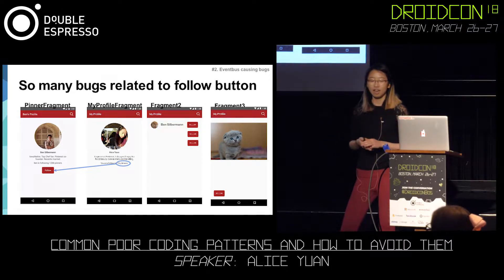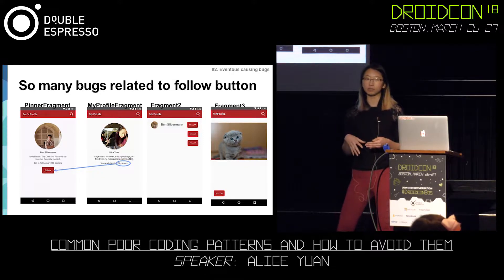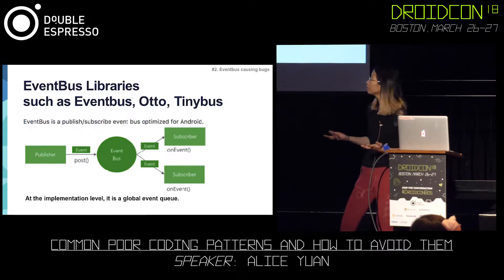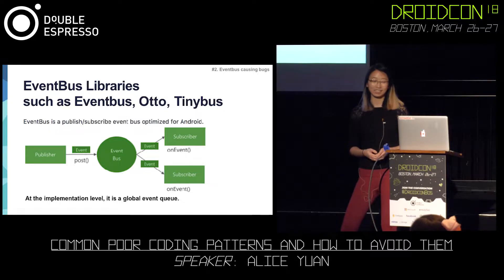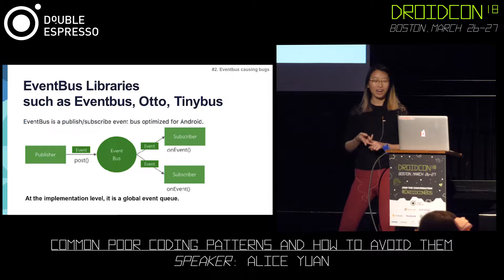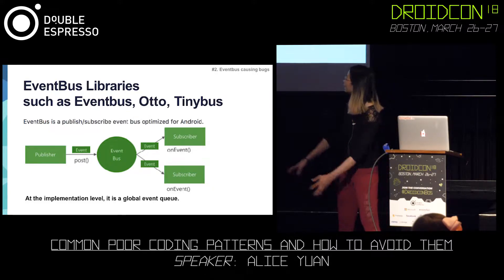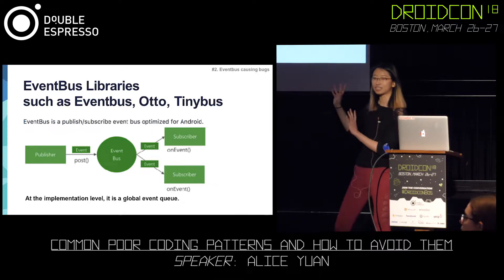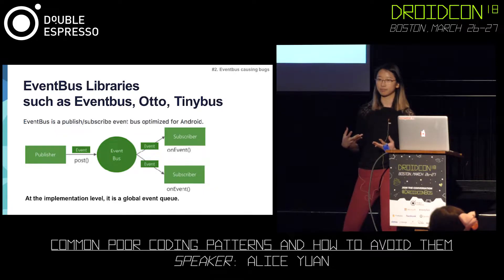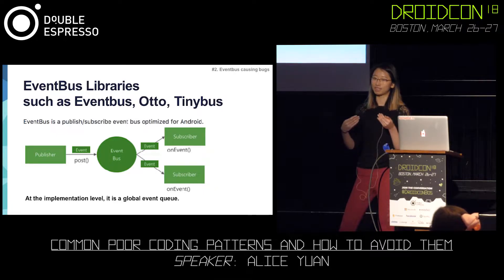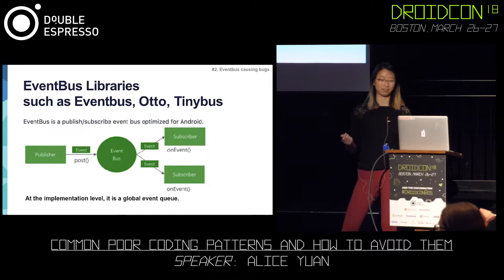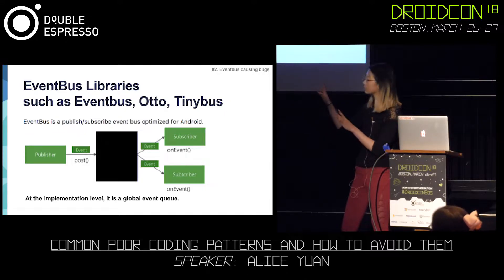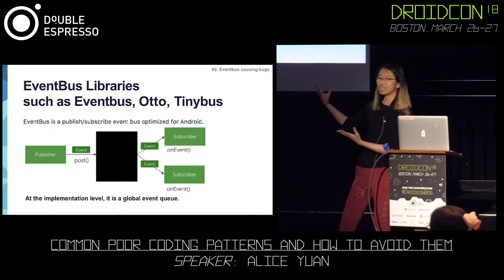The reason why this is happening is actually due to a library that we've decided to use — an event bus library. There are many different types of libraries like this: event bus, auto, tiny bus, etc. But at the basic implementation level, it is a global event queue. That means the publisher, which is sending events, doesn't know what it's sending them to. And on the other side, the subscriber receiving events doesn't know where those events are coming from. This might not seem like a big deal when it's just a single fragment talking to another fragment, but as you introduce more and more events, this becomes really confusing real fast. When we're sending those events, we're sending to basically a black box, and when we're receiving those events, we're receiving from a black box.